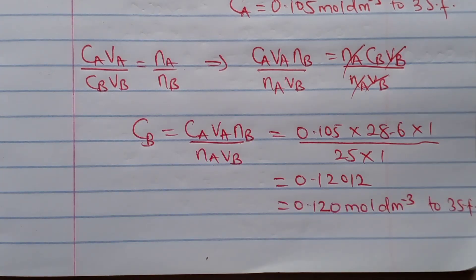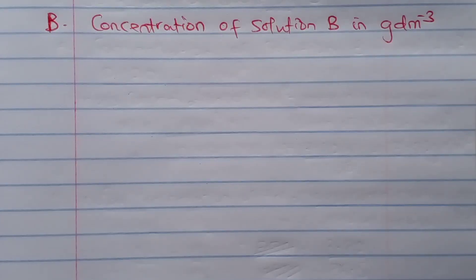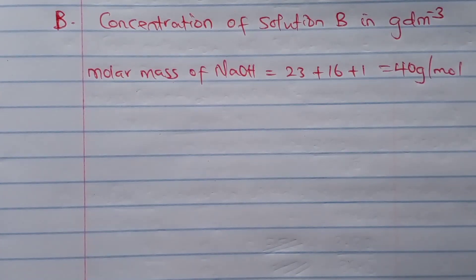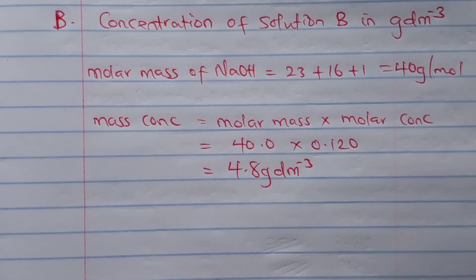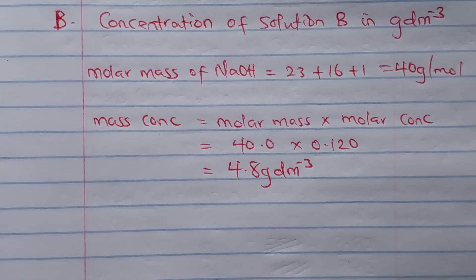Part B asks for the concentration of pure sodium hydroxide in grams per dm³. The first part was in mole per dm³; now we use the relationship between mass concentration, molar concentration, and molar mass. The molar mass of sodium hydroxide is 23 + 16 + 1 = 40. Using mass concentration = molar concentration × molar mass, this gives us 4.8 grams per dm³, which is the concentration of pure sodium hydroxide that reacted with the acid.